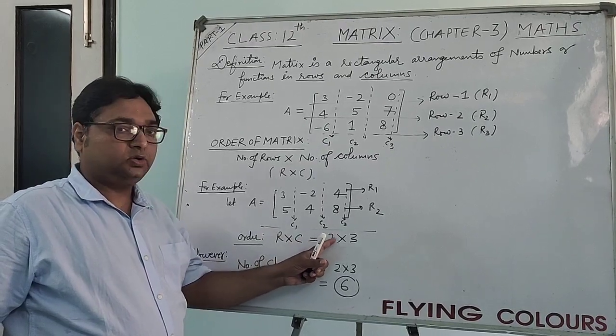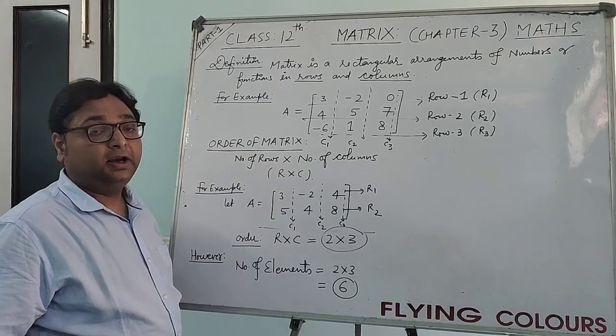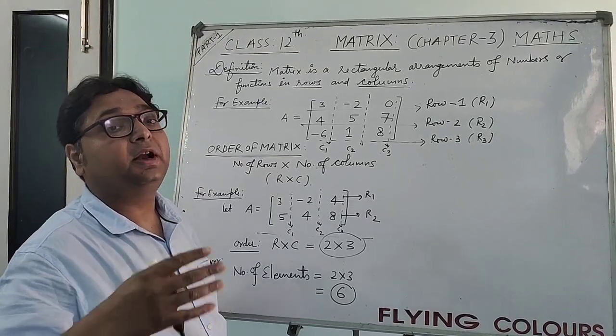So what will be the order of the matrix? 2 into 3 that is 2 into 3. This is your order of your matrix. It may be square or it may be rectangular.